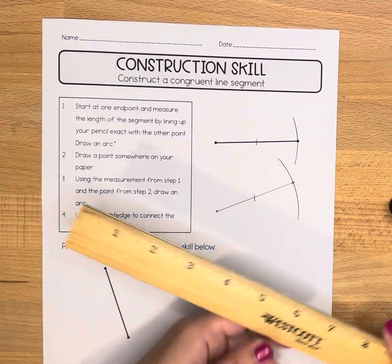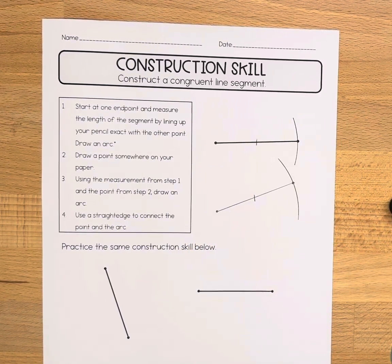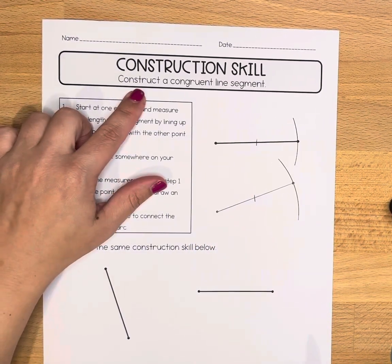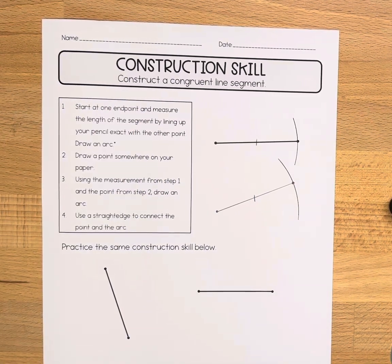If you wanted to use your ruler, if you have access to a ruler, you could verify that they are congruent. But what we're doing here is really constructing a congruent line segment, and that's why we have to use our compass to do so.